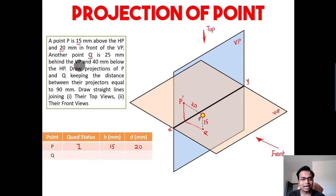25 mm behind the VP. So it's behind the VP. Now, behind the VP, we've got two quadrants: quadrant second and quadrant number third. If point Q lies above the HP, then it is situated in second quadrant. If it is below the HP, it is situated in the third quadrant.